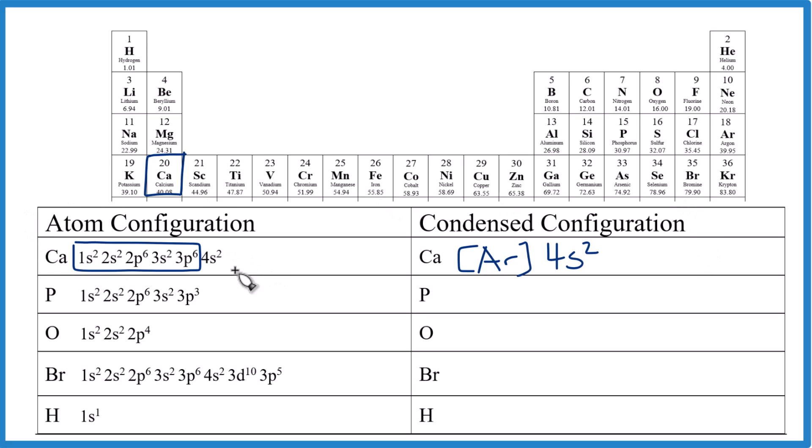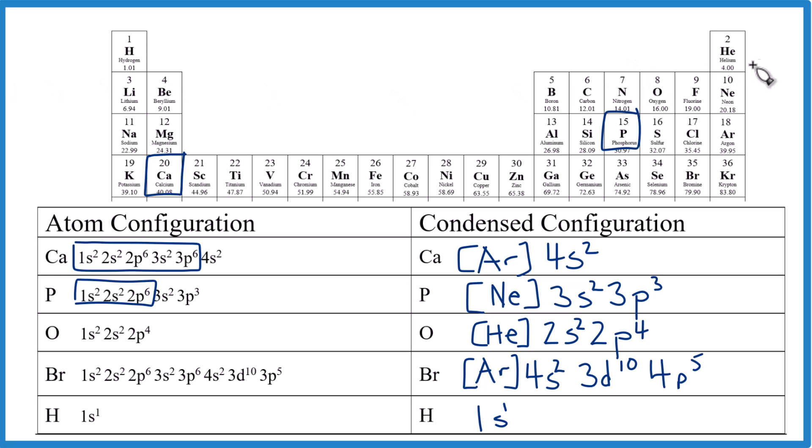So you write the actual configuration. Take the nearest noble gas that precedes it. Then you just put the ending on. So give it a try. Write the condensed configurations for these elements here. So phosphorus right here. We go back and neon. That's the noble gas that precedes it. So we write Ne in brackets. And then we're just going to put the ending. So here's neon right here with 10. There's neon 10. We just add the ending here. That's it. Oxygen like this. We're using helium because oxygen is here. We go back and right here is helium. And then bromine. Bit of work. We find bromine. Go back. Right here. Argon. So we're going to take 18 of these. That's argon. Then we just add the ending here on the end. That's it.